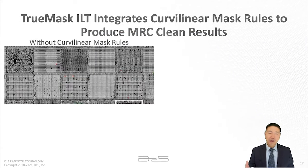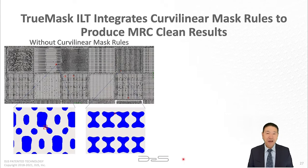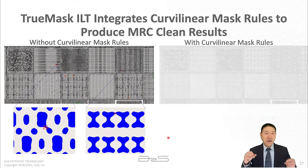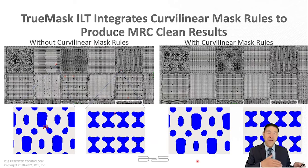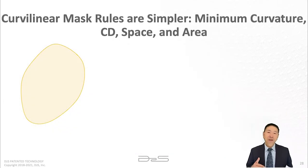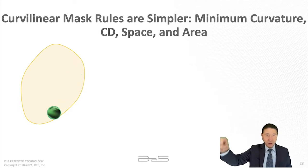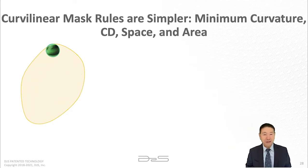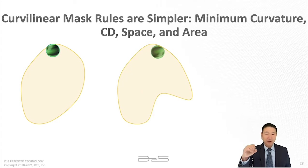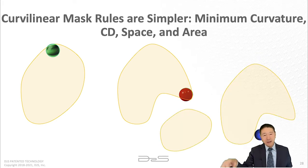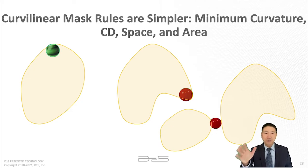You also need to meet MRC requirements. Even when generating curvilinear ILT mask patterns, you don't automatically satisfy mask rules such as minimum area, minimum width, and minimum space. You need a mechanism to clean up patterns. It turns out mask rules in curvilinear space are actually simpler than in Manhattan space — for example, minimum curvature is like rolling a ball around the pattern: if it rolls smoothly, the minimum curvature rule is satisfied; if it stops, there's a violation. The same concept checks minimum space rules on the outside.